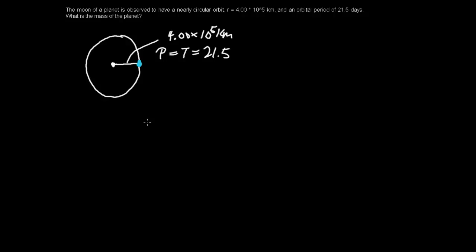Okay, so we've got our diagram. Let's set up an equation. Alright, so what do we know? We know that there seems to be gravity, a force of gravity, to allow this moon to orbit this planet. So this planet is providing a gravitational pull that allows this moon to orbit around.